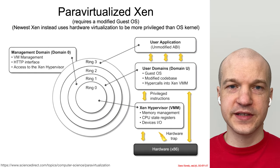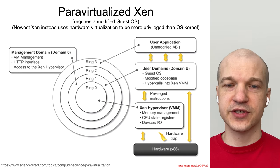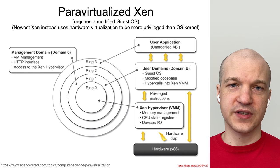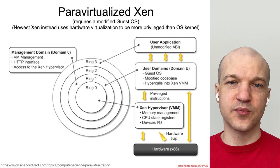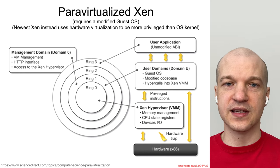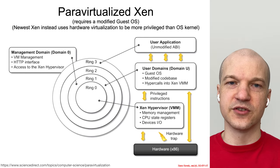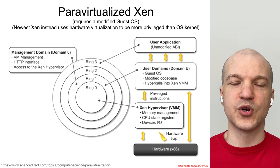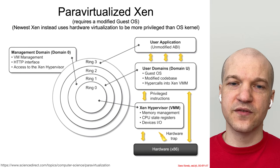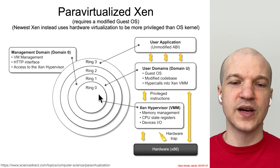You will occasionally see systems try to make use of these different privilege levels to deprivilege code. Para-virtualized Xen tries to do this. Para-virtualized refers to the idea of modifying an operating system to make it easier to virtualize — to make it work in concert with the virtualization system, instead of normal virtualization where you just take an existing system as-is and put it in a virtual environment. So para-virtualized Xen has a modified guest operating system.